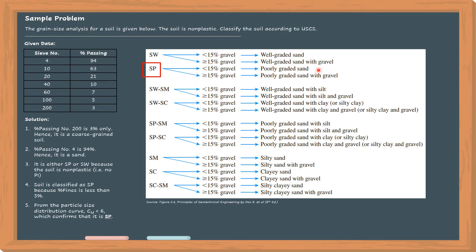For SP classification, there are two possible group names: poorly graded sand or poorly graded sand with gravel. It depends on the percentage of gravel. So let's now compute the percentage of gravel. Note that the percentage of gravel are those portions that are retained on number 4.